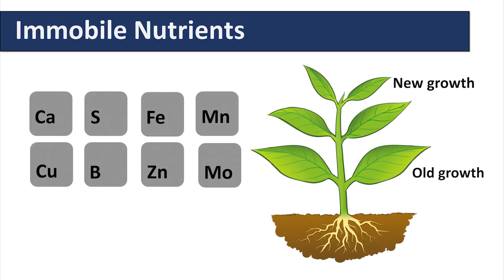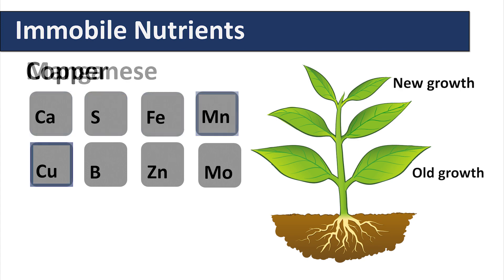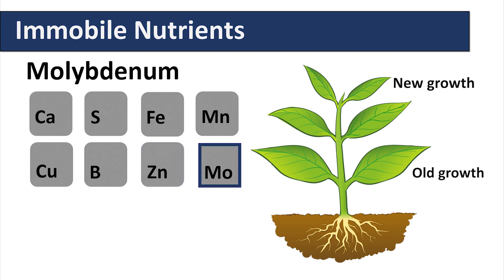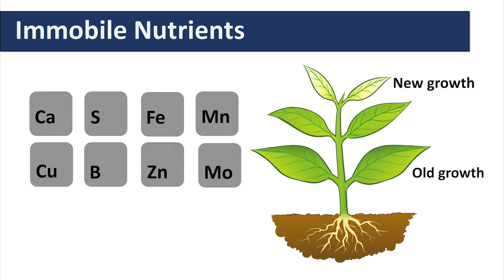Those nutrients which are immobile in the phloem include calcium, sulfur, iron, manganese, copper, boron, zinc, and molybdenum. If insufficiencies occur in the root soil, the nutrient deficiencies will be expressed in the new growth because they cannot be remobilized from the old growth and translocated into the new growth. So these nutrient deficiencies will always occur in the new growth.